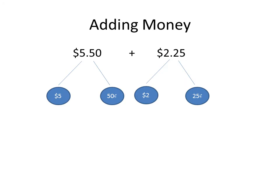Now we are going to practice adding money. You can see there are dollar 5.50 plus dollar 2.25. First, what we do is we separate these into dollars and cents. You can see that I have separated them: on the first one we have 5 dollars and 50 cents, and on the second one we have 2 dollars and 25 cents.